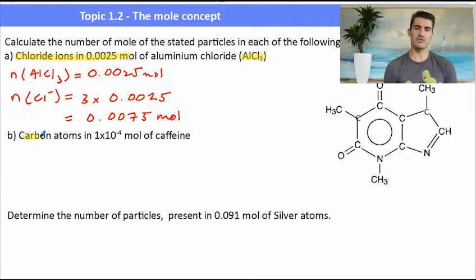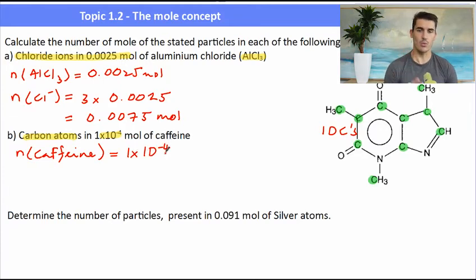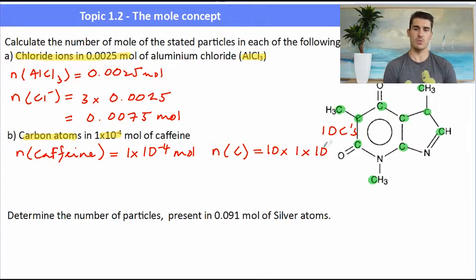If we were to find the number of moles of carbon atoms in 1 times 10 to the minus 4 moles of caffeine, then we need to see the chemical formula or the structural formula, like it's been given on the right, and we need to go through and count the number of carbons. So there are 10 carbons in the caffeine molecule. So we know the number of moles of caffeine is 1 times 10 to the minus 4. And because we have 10 carbons in every one molecule, the number of carbon will be 10 times the number of moles of caffeine. So we have 10 times 1 times 10 to the minus 4, which is 1 times 10 to the minus 3 mole. One significant figure for that one.